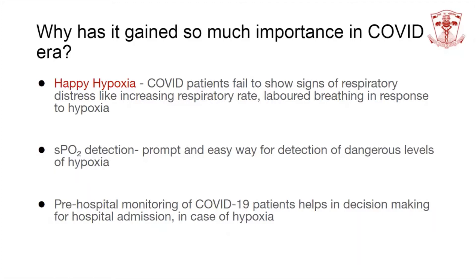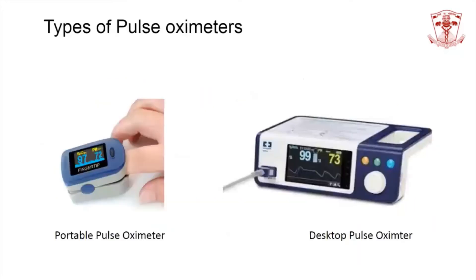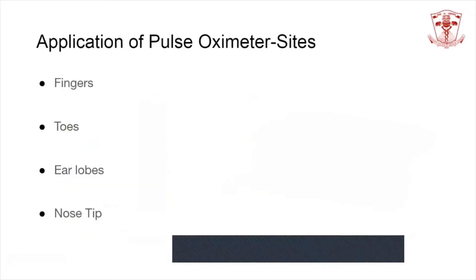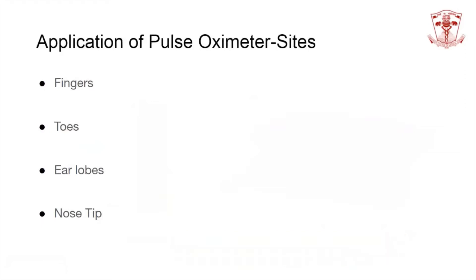Oxygen saturation is also useful in pre-hospital monitoring of COVID-19 patients and helps in decision making for hospital admission in case these patients develop hypoxia. Portable pulse oximeters are mostly used during home management of COVID-19 patients. Various sites for application include the fingers and toes, which are the most commonly used, with less common sites being the ear lobes and the nose tip.